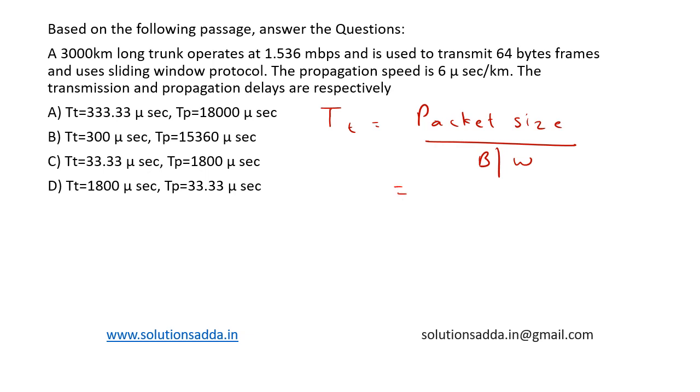Let's try to calculate. The packet size is 64 bytes and the bandwidth is 1.536 megabits per second. That is, mega means 10 to the power of 6 bits per second. We have to convert it into a uniform unit, so let's convert bytes to bits: 64 times 8 bits divided by 1.536 times 10 to the power of 6 bits per second.